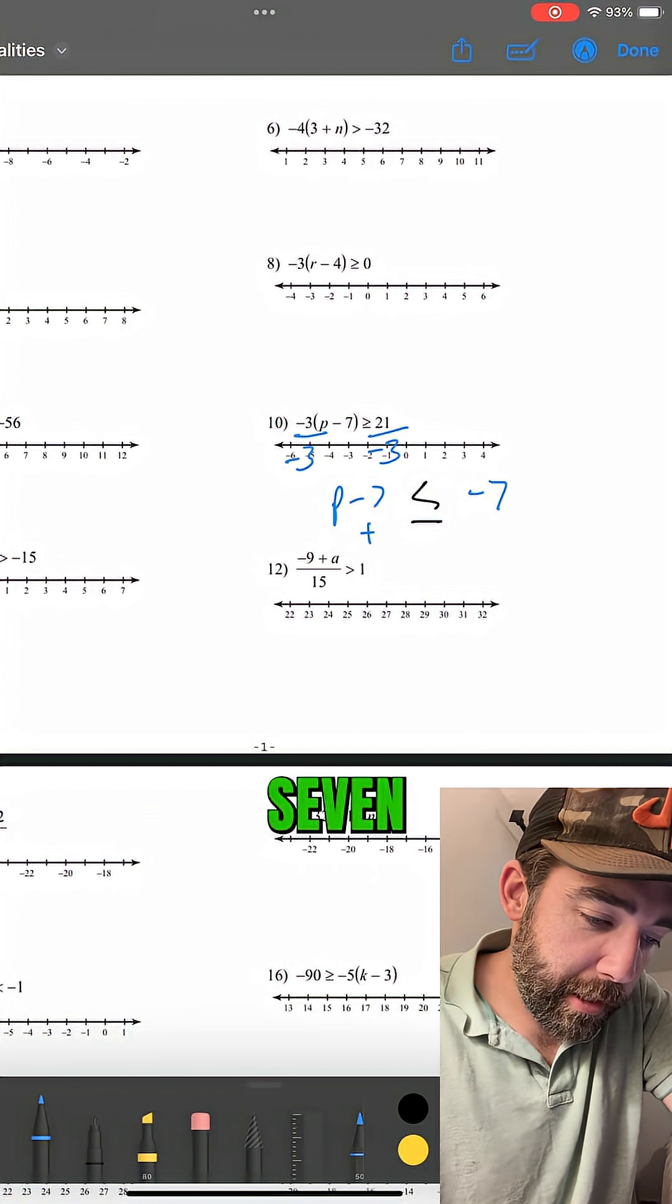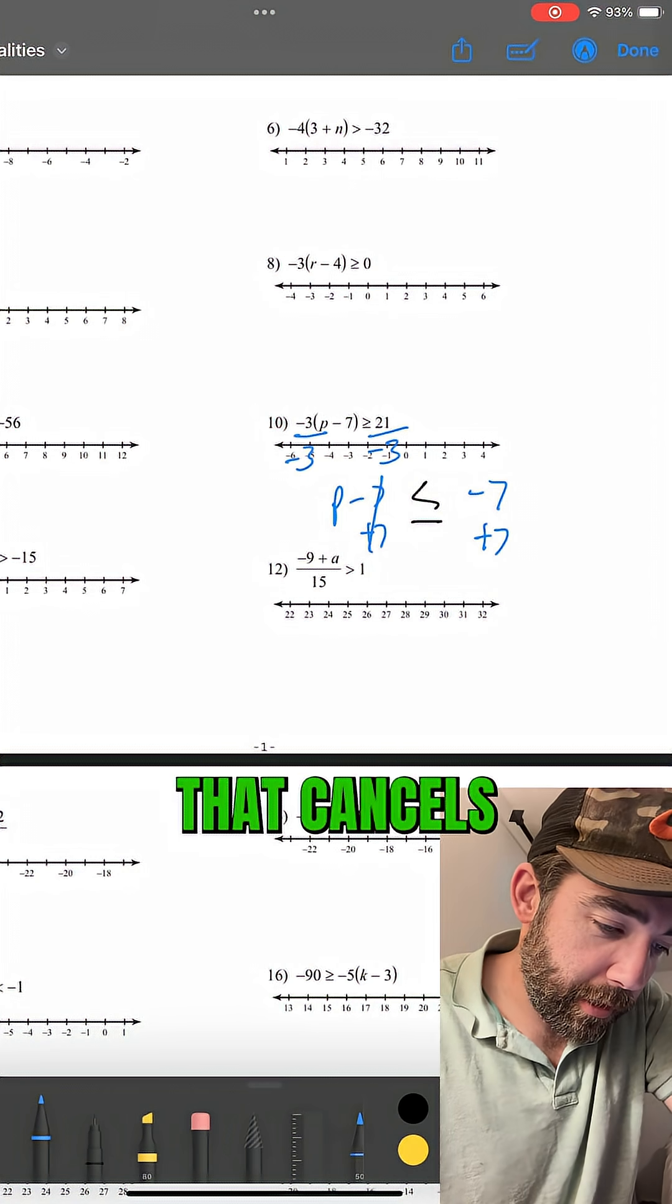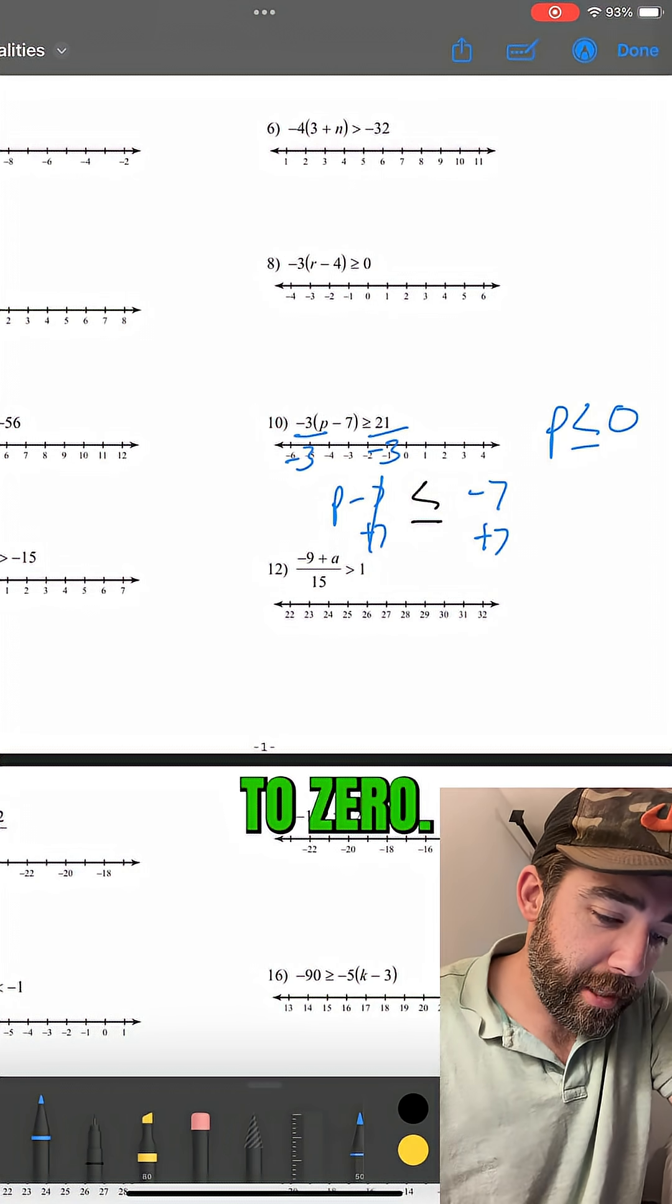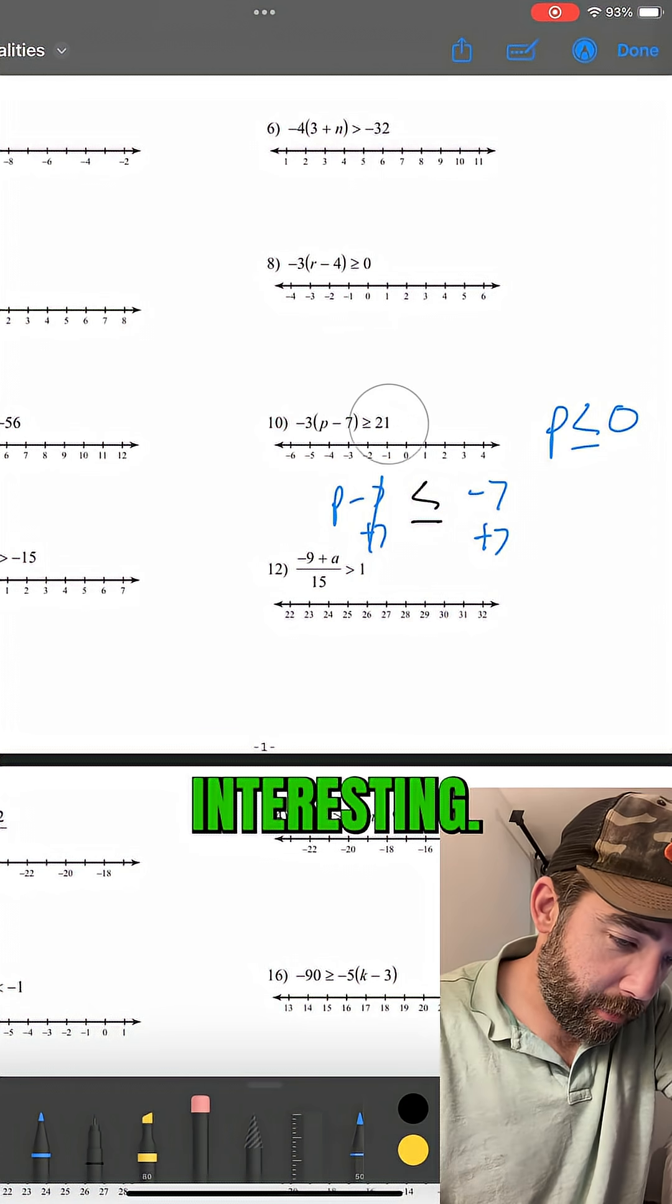And now we will add 7 to both sides. That cancels that guy out. We have p is less than or equal to 0. Well, that's interesting.